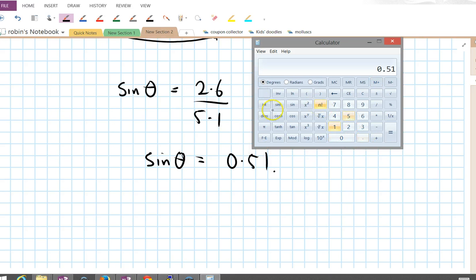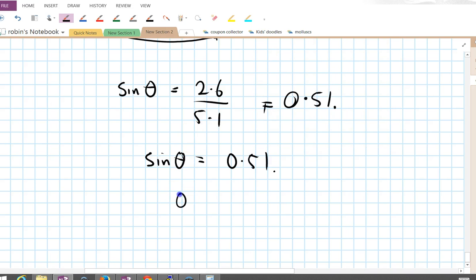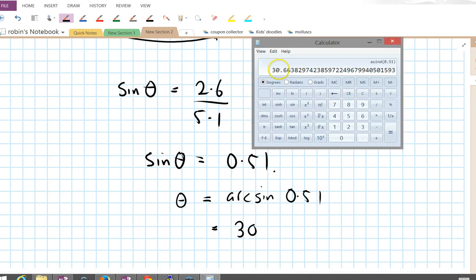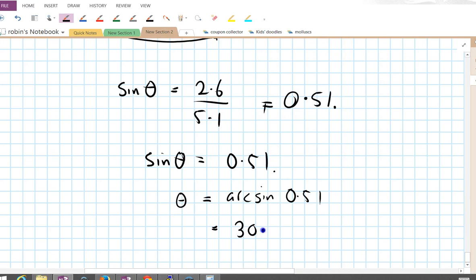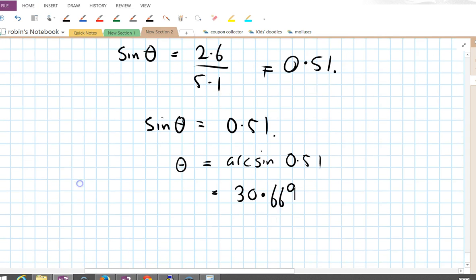0.51 and then inverse sine. Inverse sine, 30.66. So when I said 30.5, that's not too bad. So that tells me that theta equals arcsine 0.51, which equals 30.66 degrees.